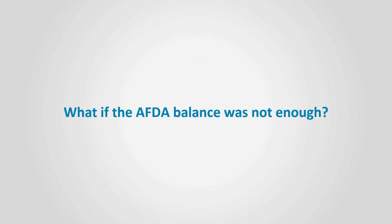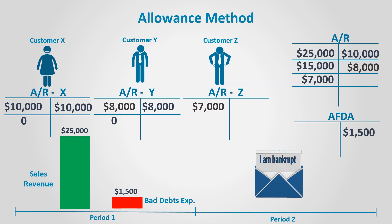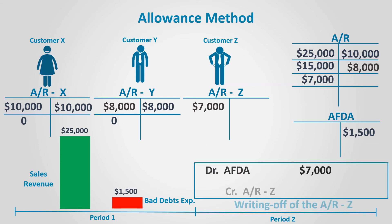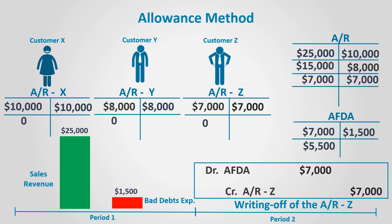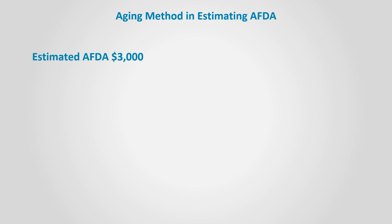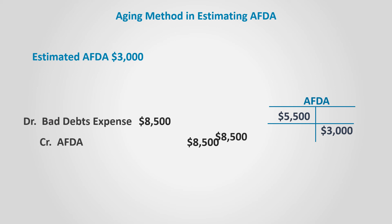What if the AFDA balance was not enough? Assume that Customer Z didn't pay anything and went bankrupt. The AFDA balance of $1,500 is not enough. We will still debit AFDA for $7,000, leaving it with a debit balance of $5,500 — an abnormal balance, since its normal balance is credit. When this occurs, it means our estimation of bad debts was not correct, and the business must review its estimate for the current year. Now assume the business uses the aging method and the estimated AFDA is calculated to be $3,000. Given that the AFDA balance is a debit of $5,500, the adjustment entry for bad debts expense for period two is: debit bad debts expense by $8,500 and credit AFDA by the same amount.